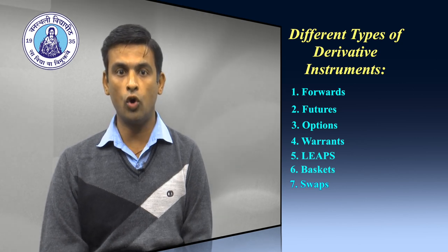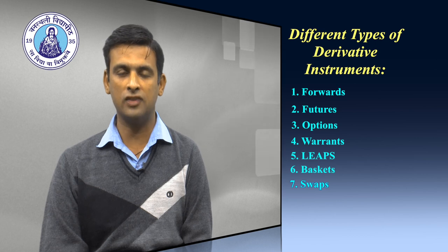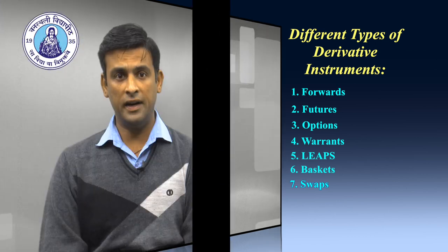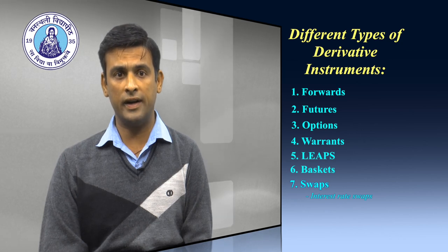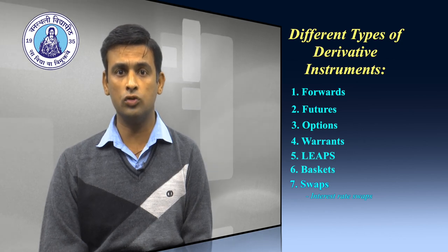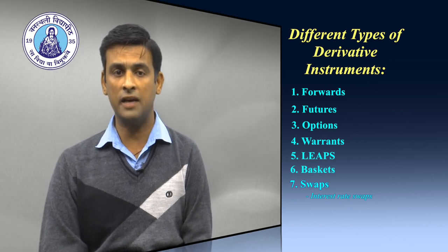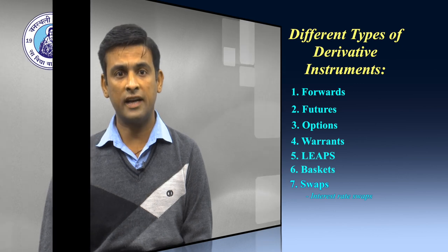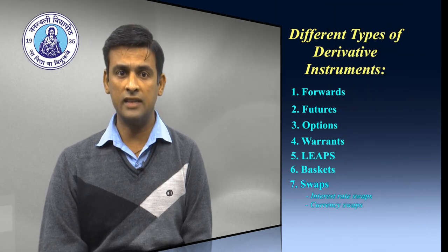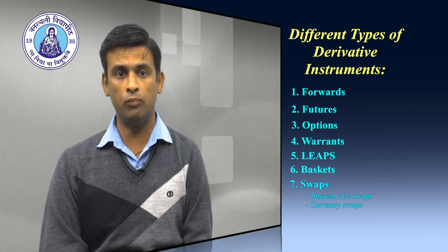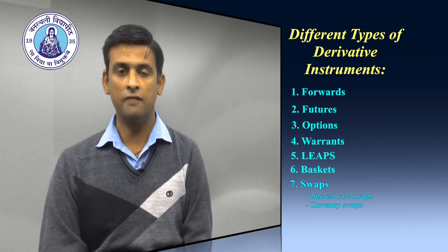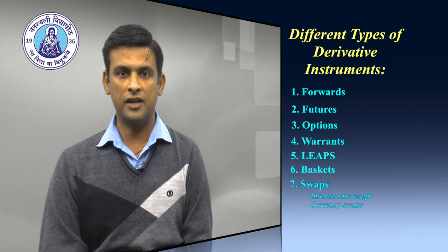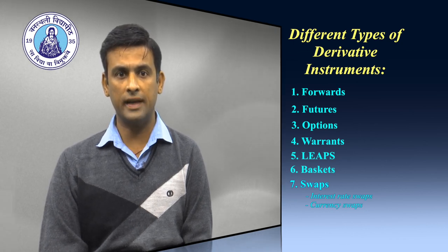The two commonly used swaps are: number one, interest rate swap, which entails swapping only the interest-related cash flows between the parties in the same currency. The second one is the currency swap, which entails swapping both principal and interest between the parties, with the cash flows in one direction being in a different currency than those in the opposite direction.